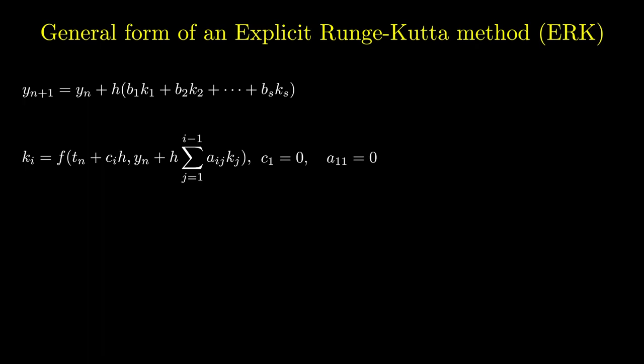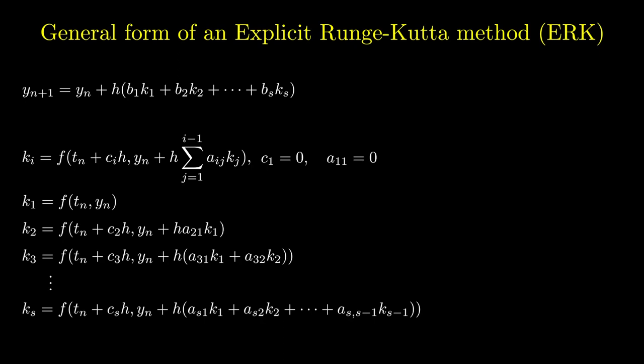Expanding the summations again we see the expression for y_{n+1} is the same as an IRK method but the expressions for k_1, k_2, etc. are now explicit relations. In other words, k_1 no longer appears on the right-hand side of the expression for k_1 and similar for the others.